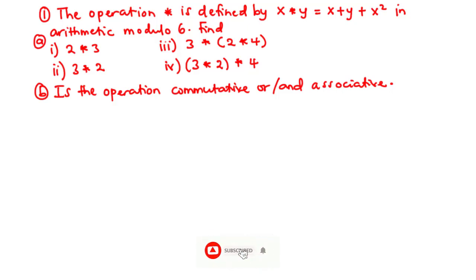The operation star is defined by x star y equals x plus y plus x squared in arithmetic modulo 6. Find: (i) 2 star 3, (ii) 3 star 2, (iii) 3 star (2 star 4), and (iv) (3 star 2) star 4. Also, (b) is the operation commutative or associative?